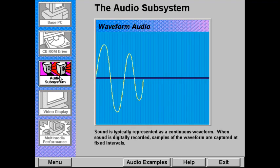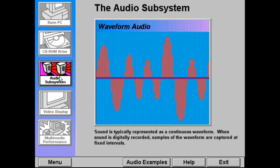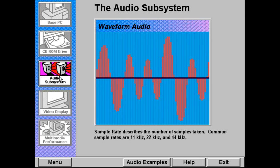Sound is typically represented as a continuous waveform. When sound is digitally recorded, samples of the waveform are captured at fixed intervals. The more samples that are taken, and the more information stored for each sample, the higher the quality of the sound. The sample rate, measured in kilohertz, describes the number of samples taken.